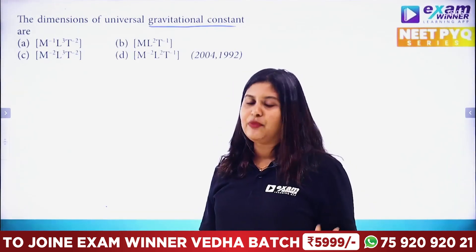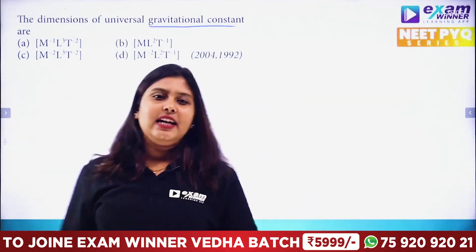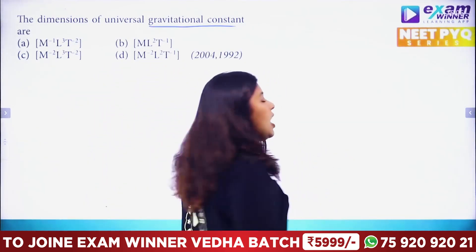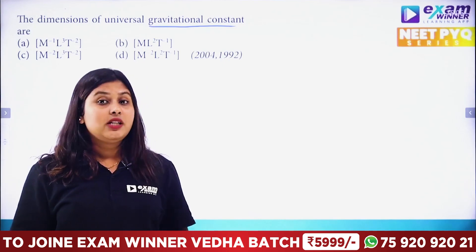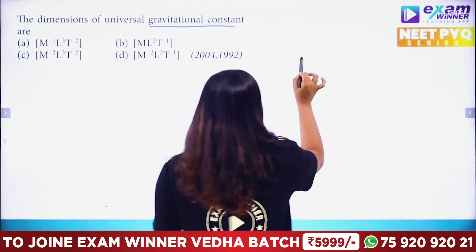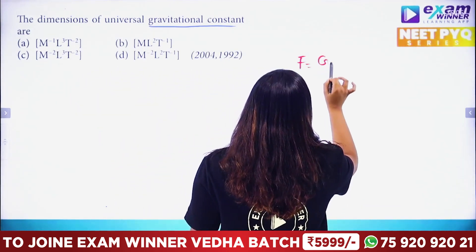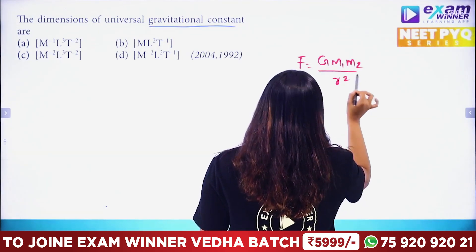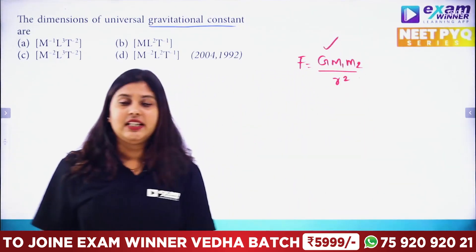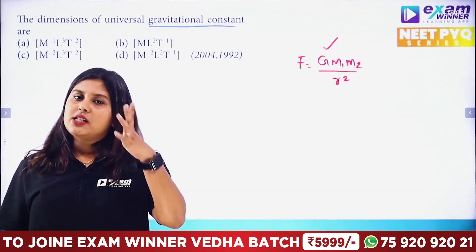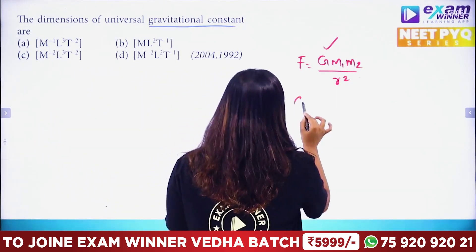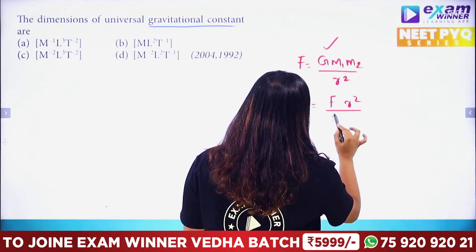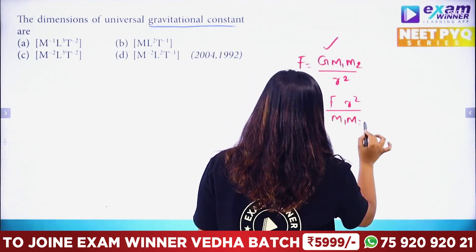We recall that F is equal to G·m1·m2 divided by r squared. Rearranging, G is equal to F·r² divided by m1·m2.